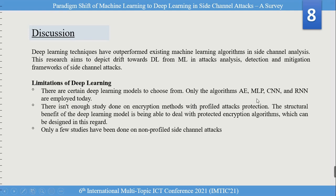The limitations of deep learning in the context of side channel attacks are that only a few models are incorporated. You may use many other algorithms and techniques of deep learning, and you may change the deep neural network architectures to create your own model for side channel attack detection and mitigation. There is also insufficient study on encryption methods within deep learning models in the context of side channel attacks, and very few studies have been found on non-profiled attacks.